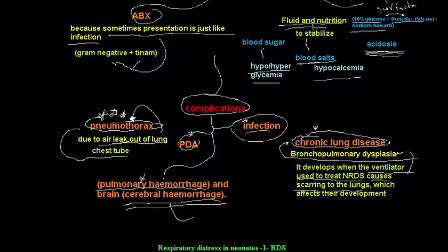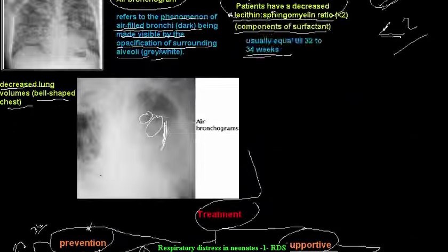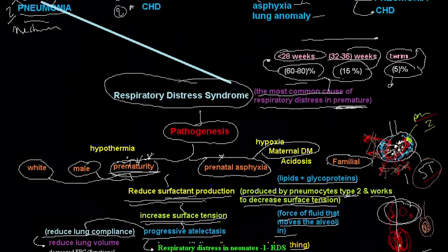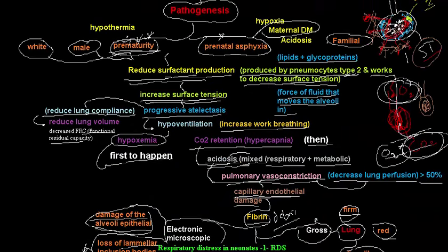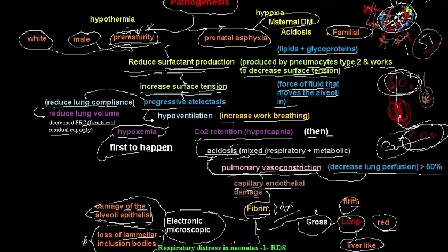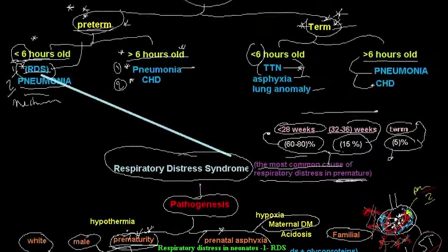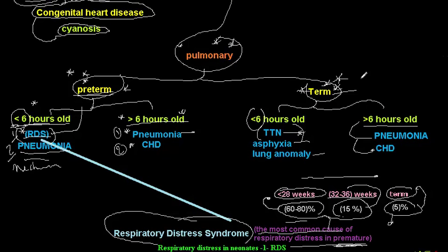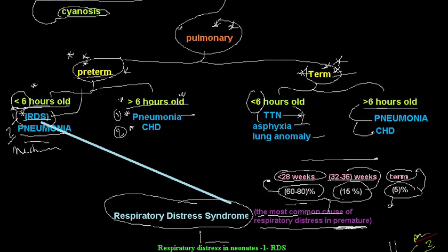In the next video I will briefly cover other causes of respiratory distress in neonates: meconium aspiration, congenital pneumonia, and transient tachypnea of the neonate.